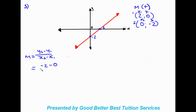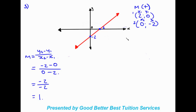Substituting in: y₂ is negative two, minus zero — we don't need brackets here because it won't be affected by the negative sign. Over zero minus two. That gives us negative two over negative two, and negative divided by negative gives a positive, so our gradient is positive one, which confirms the positive gradient we identified.